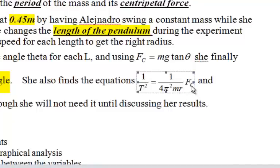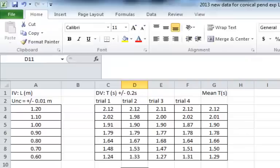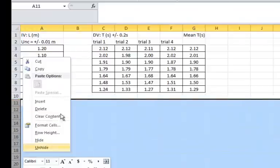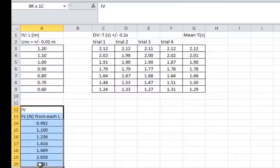So what this means is we need each Fc and we need one over the period squared. So we go back to our Excel data table. Each length, what I've done is I've calculated each Fc. So I've just calculated each Fc from the instructions.